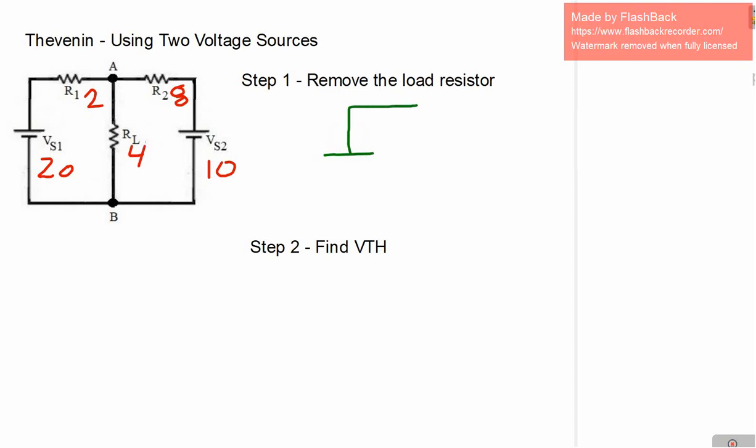So in our first step we are going to remove the load resistor and then once we do that you'll see that we have a series circuit with only one current flowing. Once we have this it makes it much easier to work with and understand. So here is our schematic with the load removed. Again VS1 is 20 volts, R1 is 2 ohms, R2 is 8 ohms, and VS2 is 10 volts.